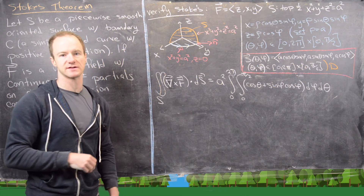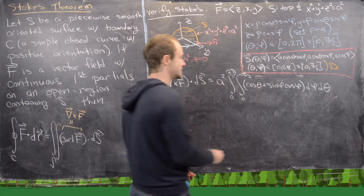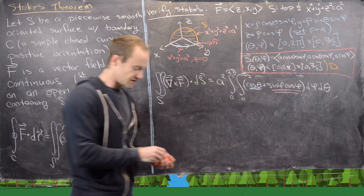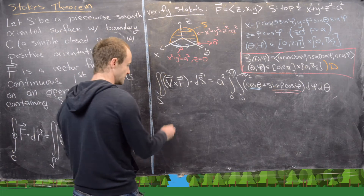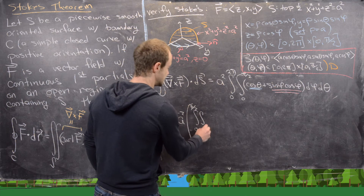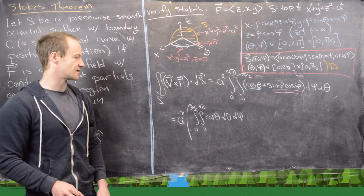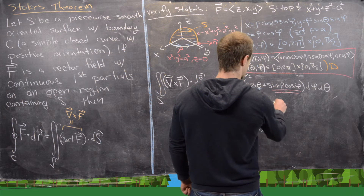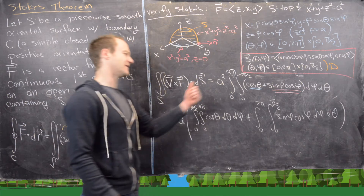We split this double integral into the sum of two parts. The first term, cos θ, is only a function of θ, and the second, cos φ sin φ, is only a function of φ. So we have A² times [∫₀^(π/2) ∫₀²π cos θ dθ dφ + ∫₀²π ∫₀^(π/2) sin φ cos φ dφ dθ], using Fubini's theorem to rearrange orders of integration as needed.